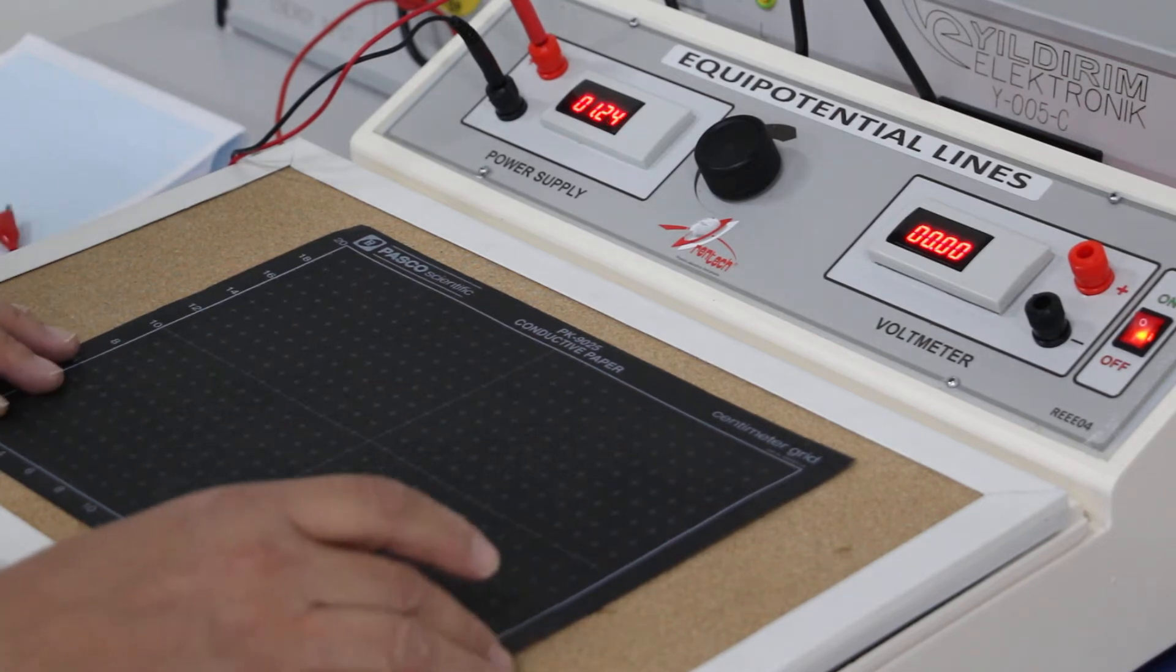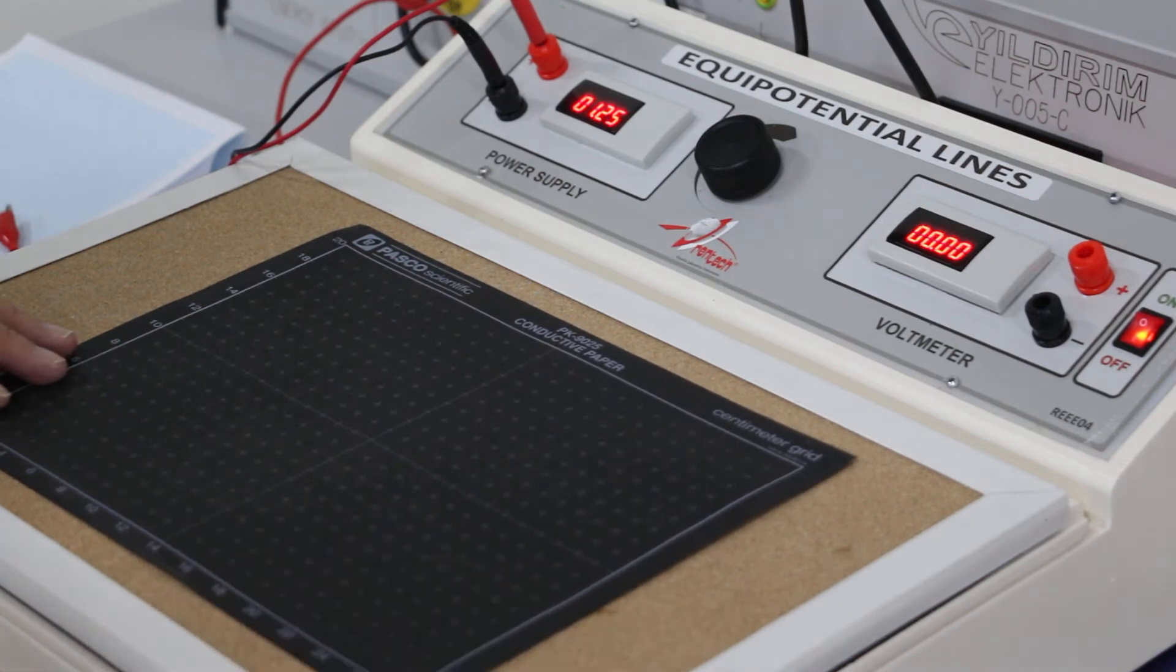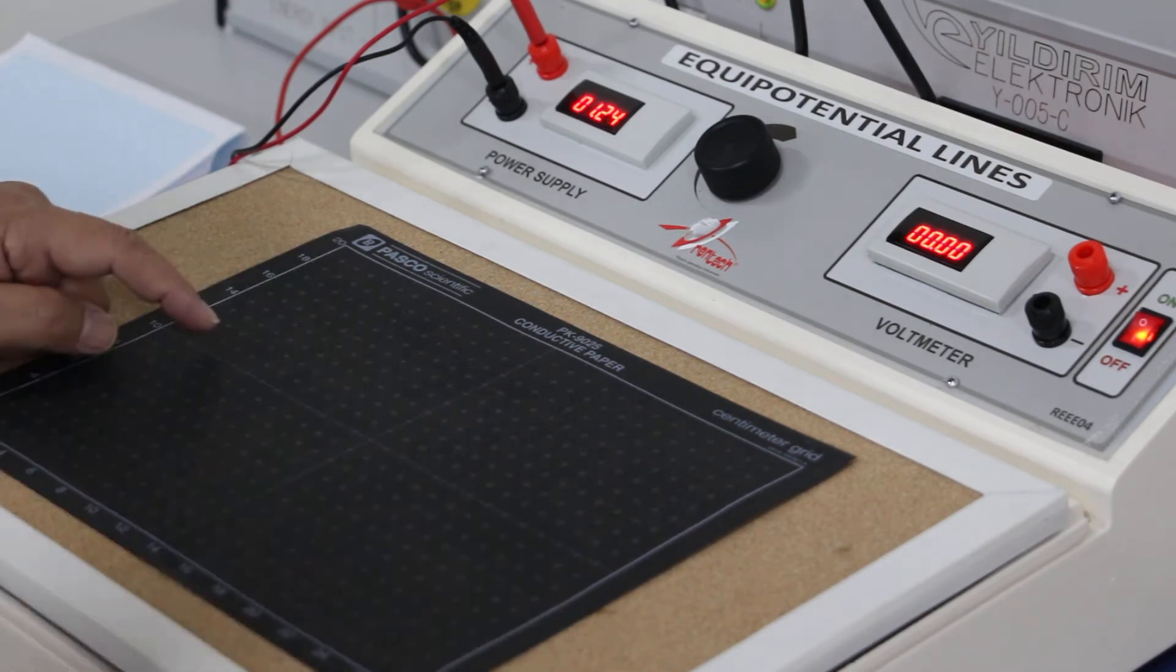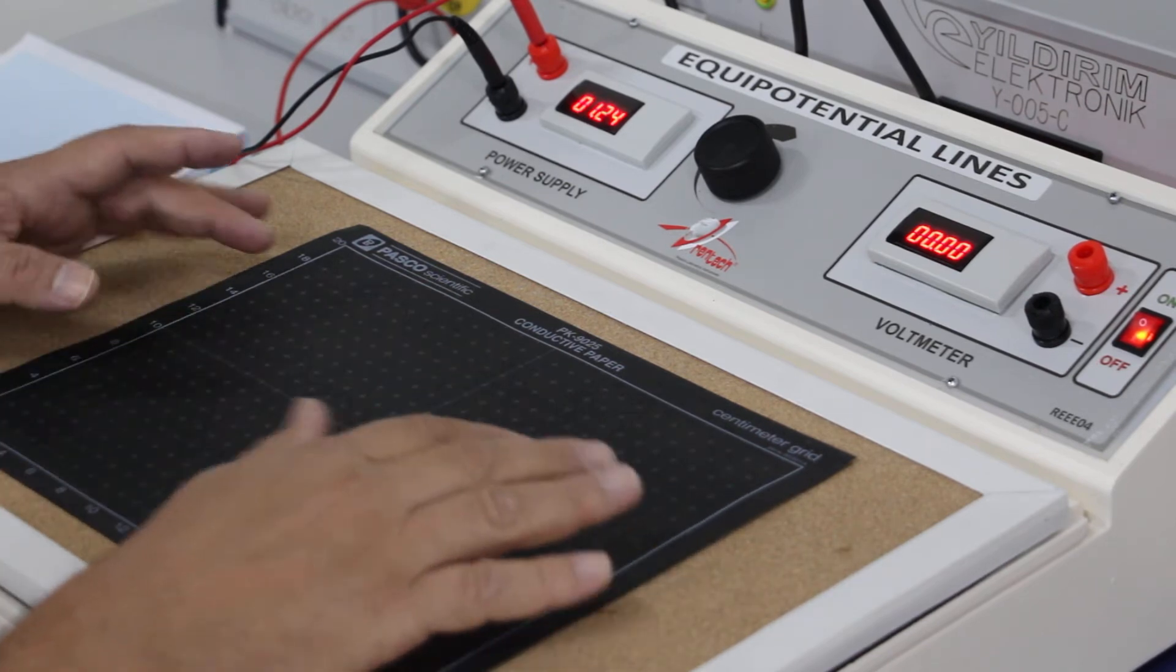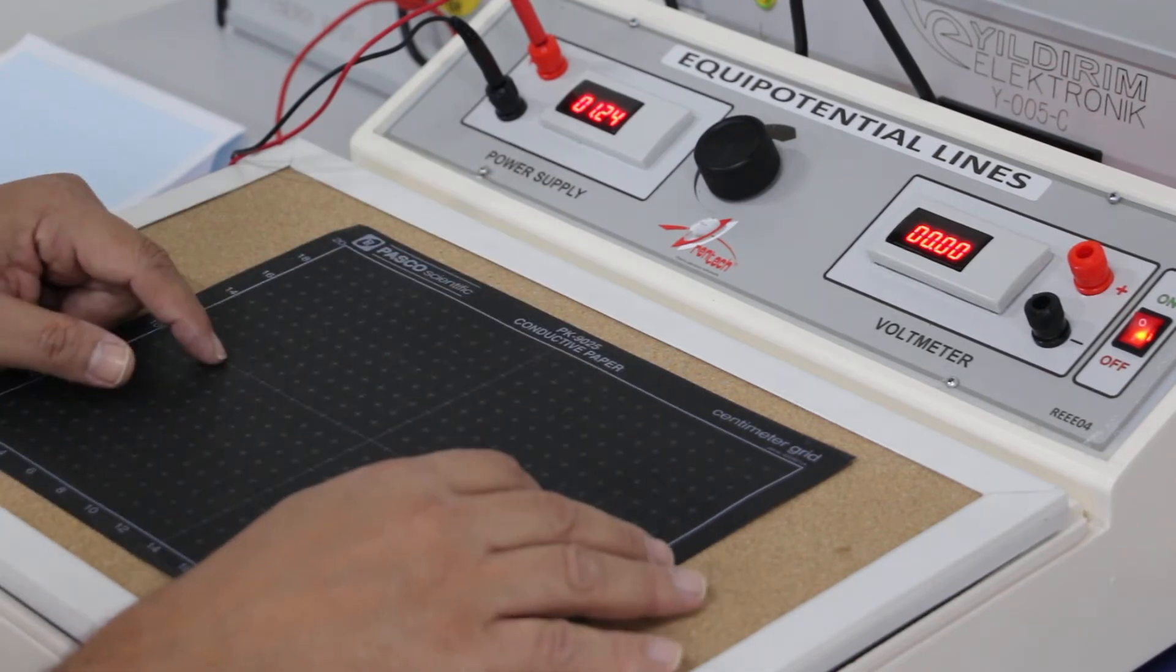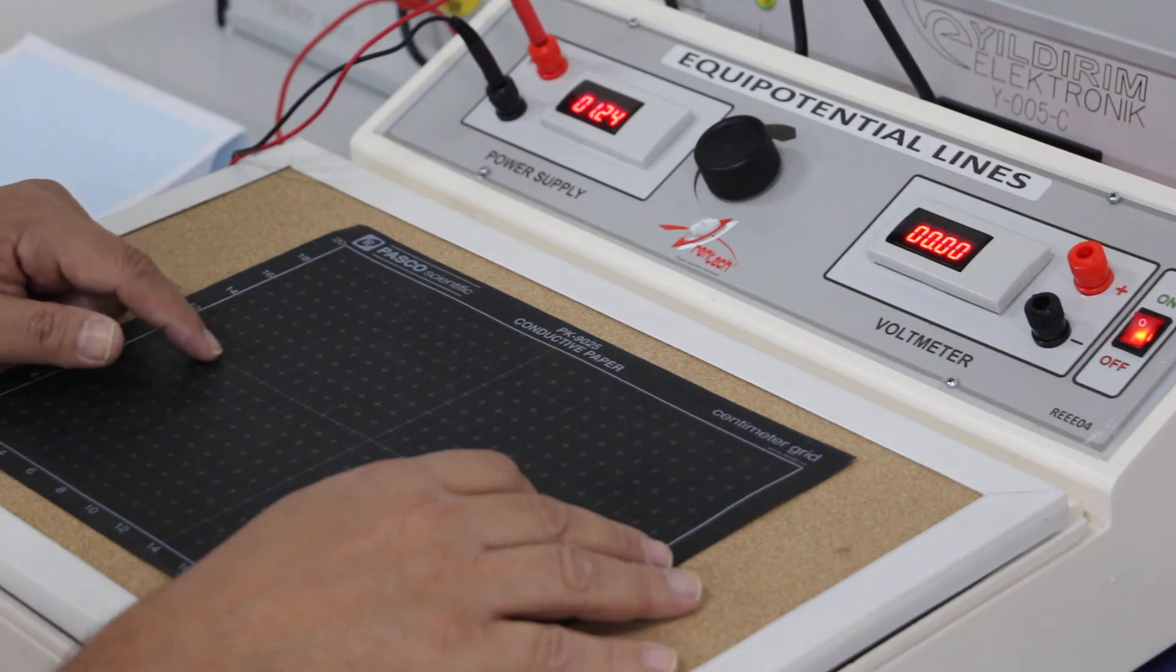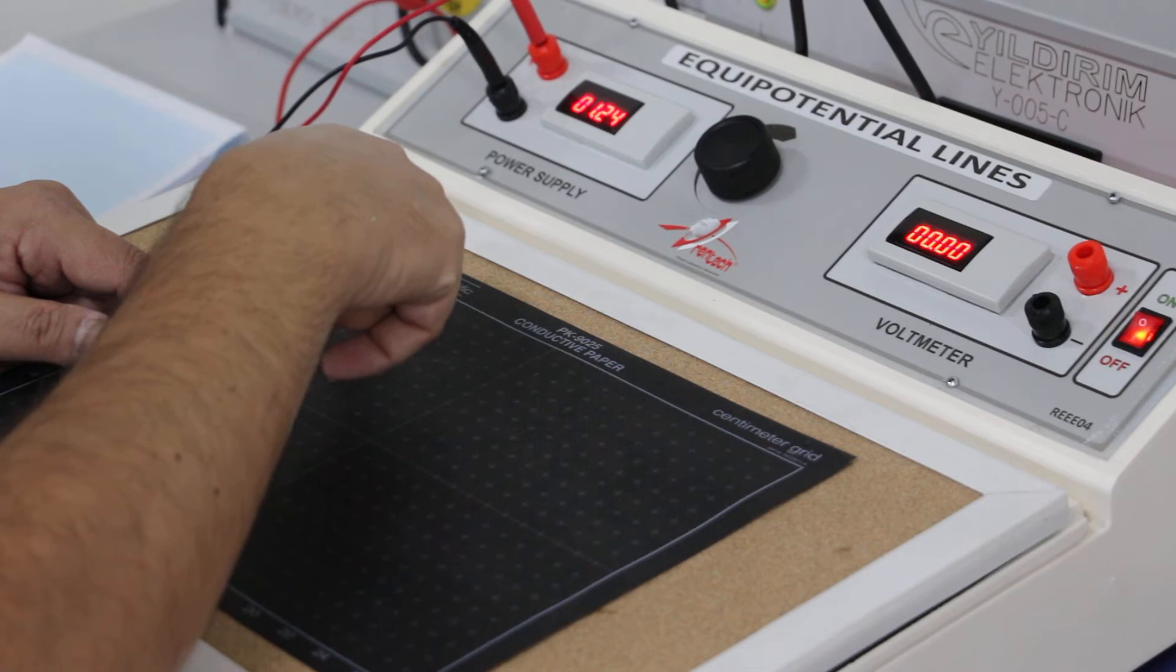Now, on this conductive paper we will apply two point potential difference. This potential difference makes an electric field. And we will observe the potential lines on this electric field.